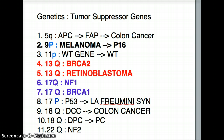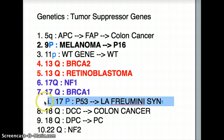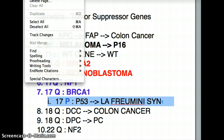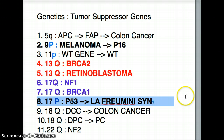This is followed by 17P, which is very important — this is the one that causes all kinds of cancer. It causes Li-Fraumeni syndrome. The tumor suppressor gene here is P53, and it is on 17P.